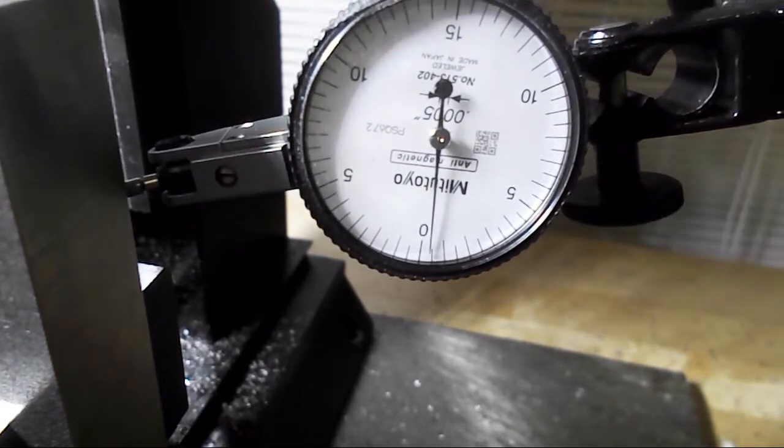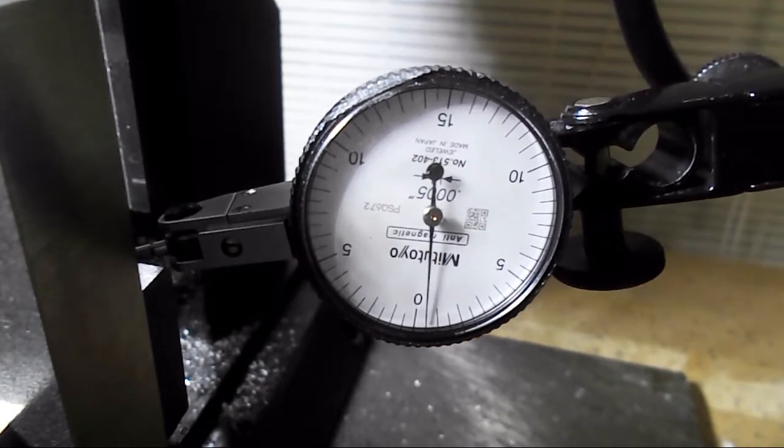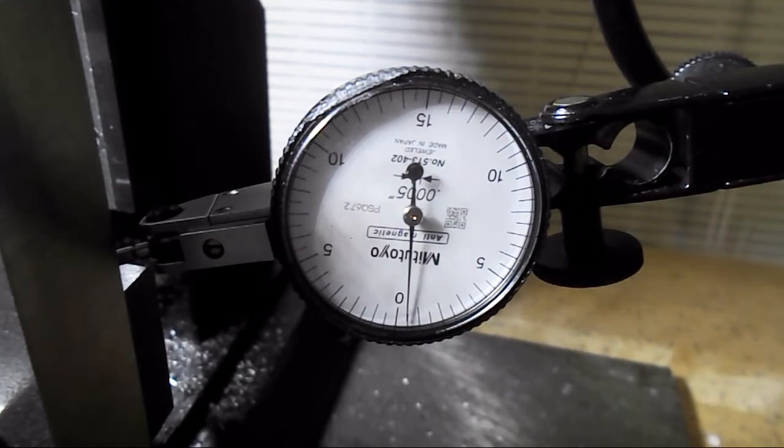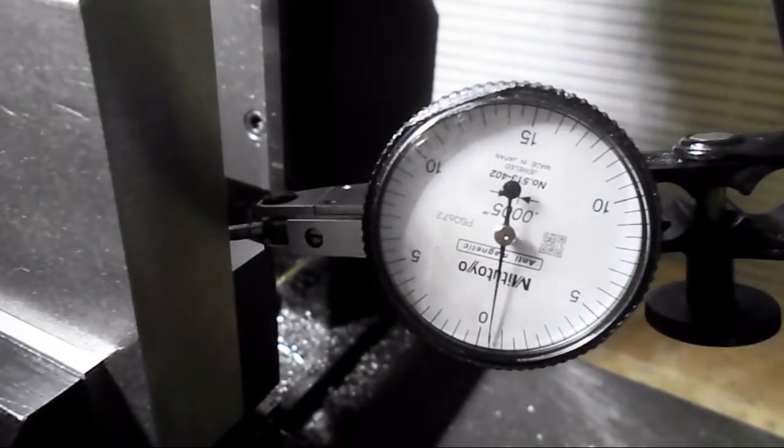If I wanted to get it a little better, there's a couple things that I could do. I could put some shim stock maybe back here. There's a few methods that we could do. So now I have that square.